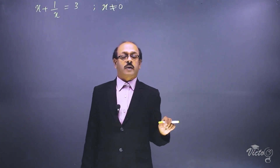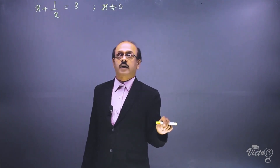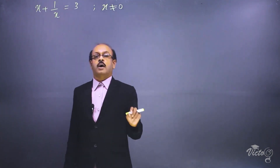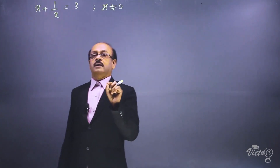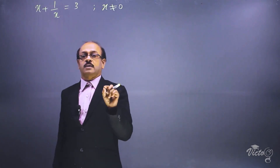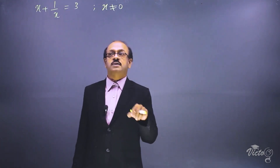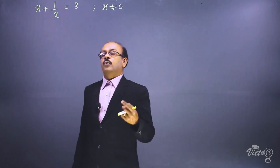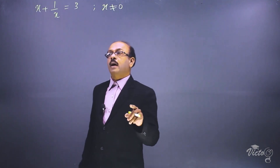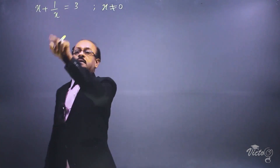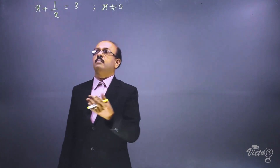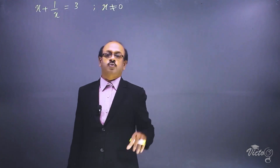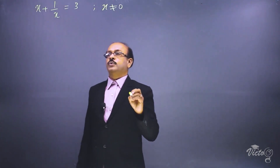The standard form is ax squared plus bx plus c is equal to 0, and the given question is not in that standard form. First of all, we have to make the given equation into standard form. For that, either we can multiply throughout by the denominator x, or simply simplify the left side and finally cross multiply. These are the two methods.